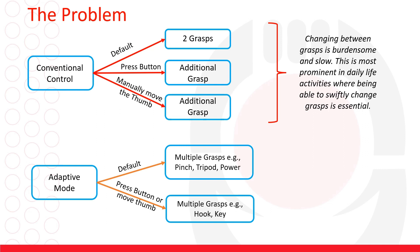Current prosthetic hands have adaptive modes where they can achieve multiple grasps with the same instruction and this creates a new problem of how to know which grasp is being used without relying on visual feedback.